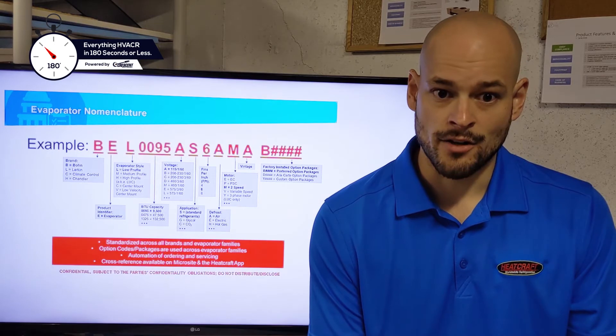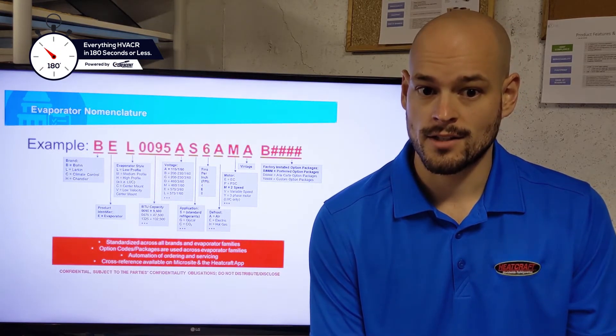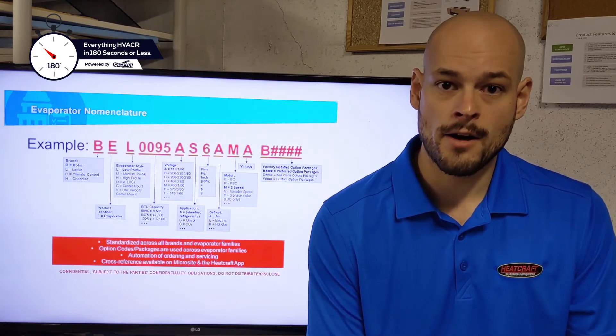Your next digit is going to indicate your application refrigerant. All your standard refrigerants are just going to have an S in the slot. Your glycol models are going to have a G, and your CO2 models are going to have a C.